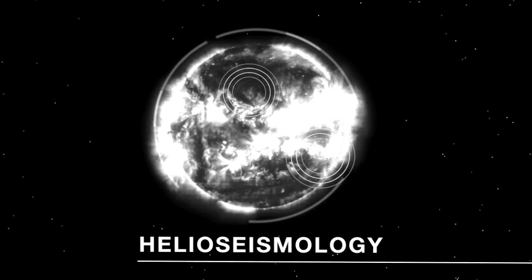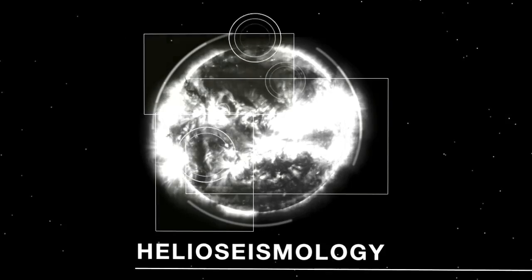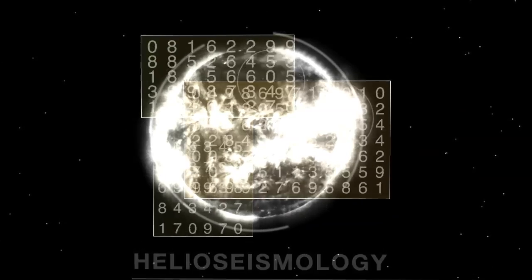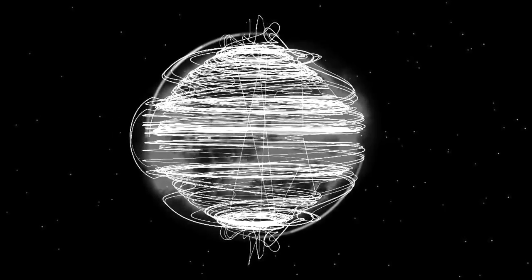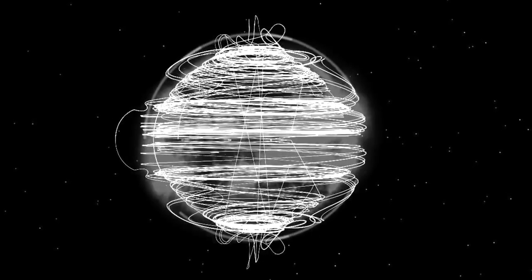The helioseismic refers to the sound waves that we can measure at the surface of the sun. When we carefully analyze them, we can look inside the sun and see what's happening under the surface of the sun and even what's happening on the other side of the sun.